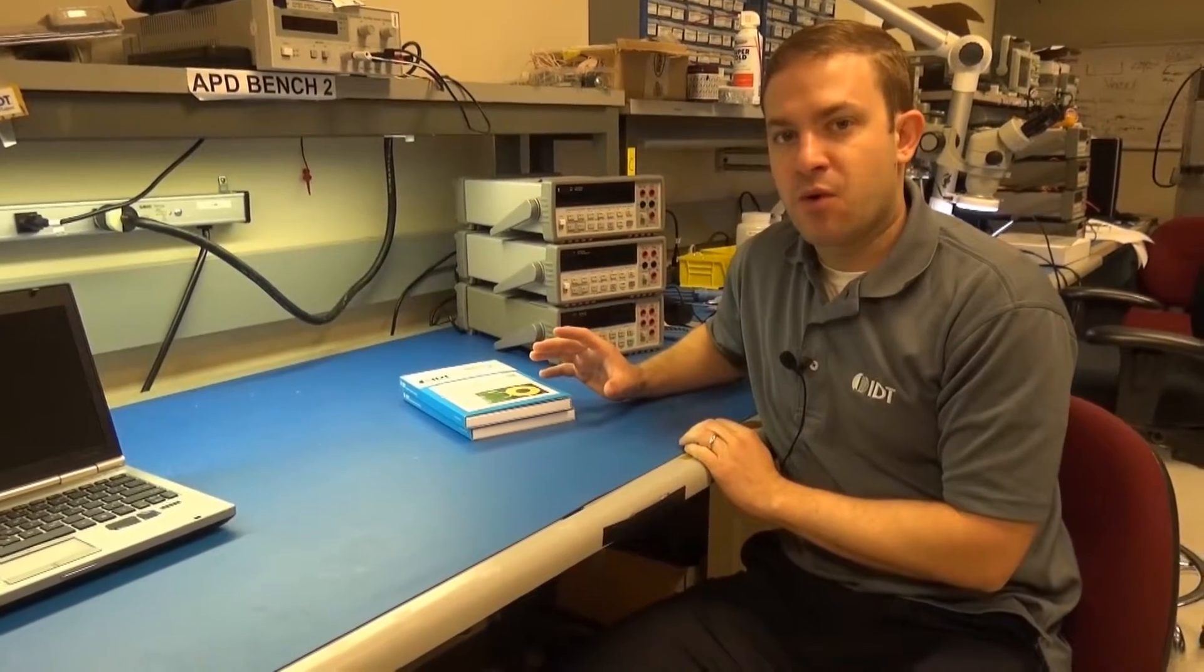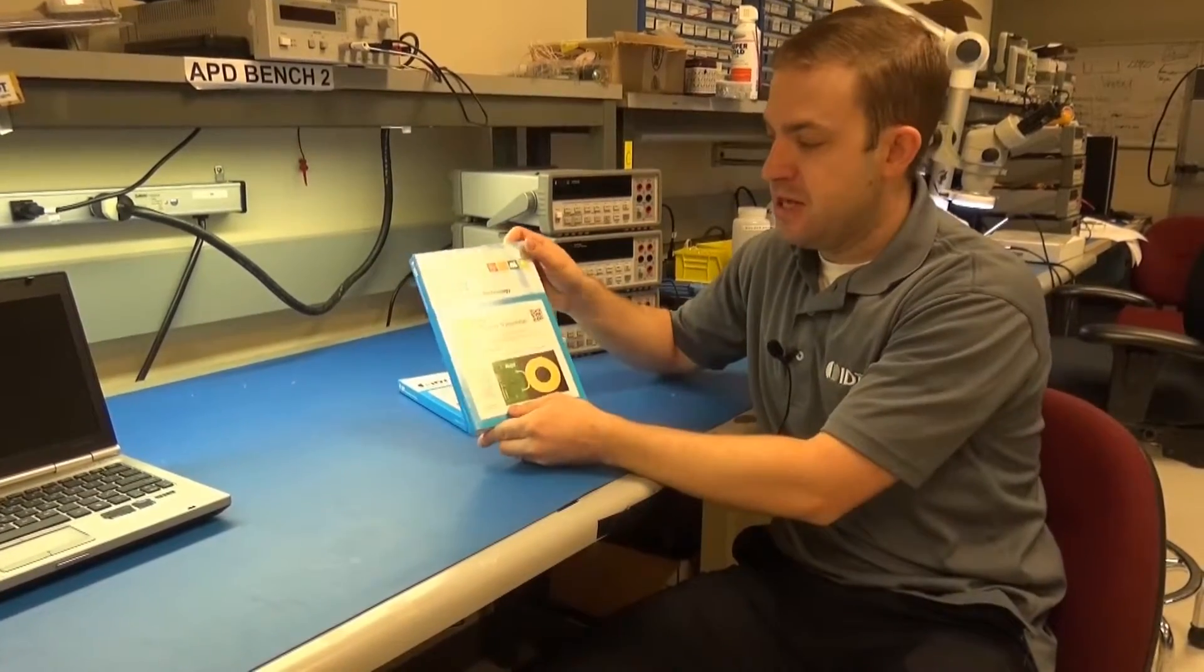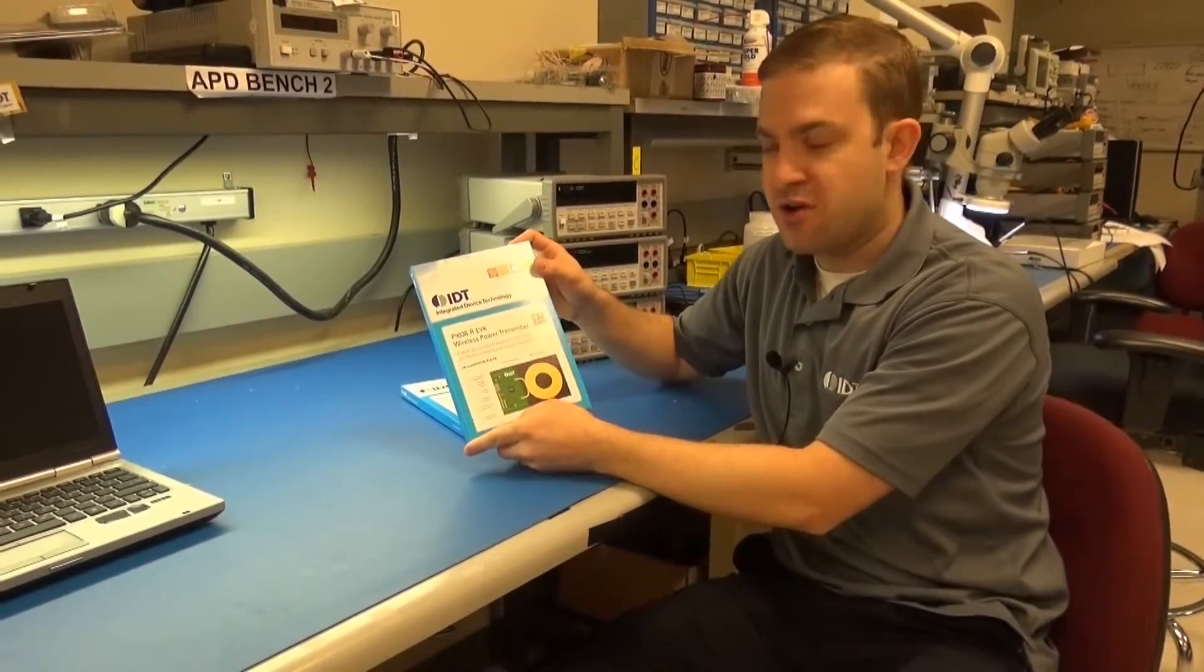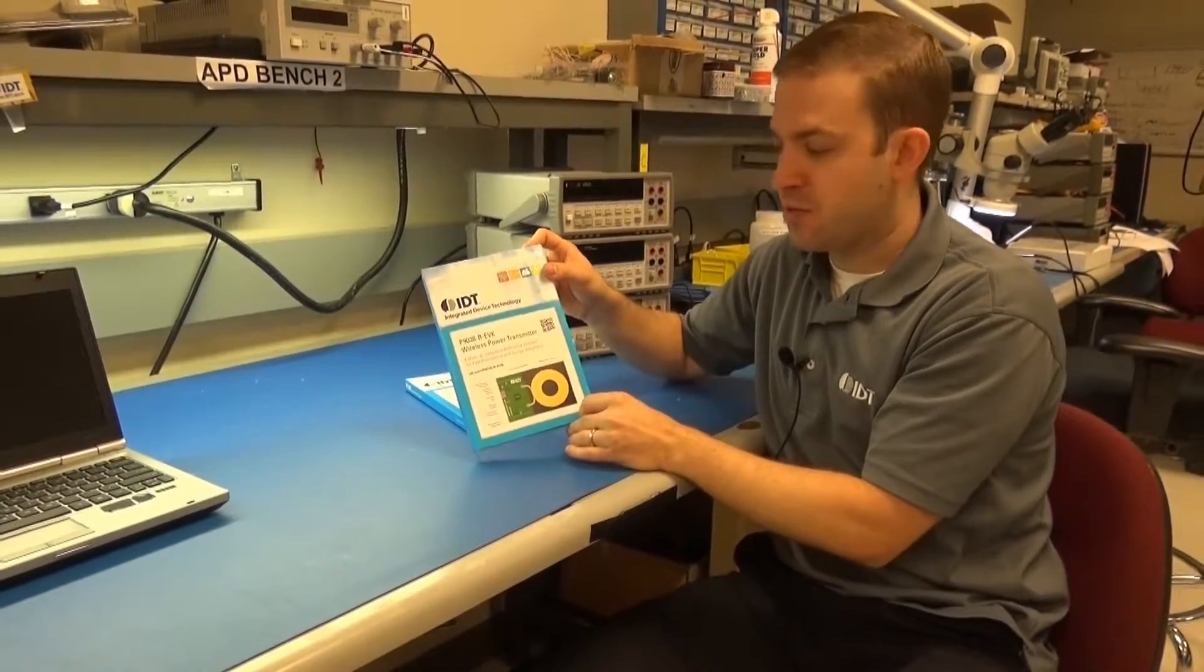Let me show you what you'll get when you order your wireless power reference kits from IDT. This is the P9038-R-EVK, the official part number for the wireless power transmitter board.